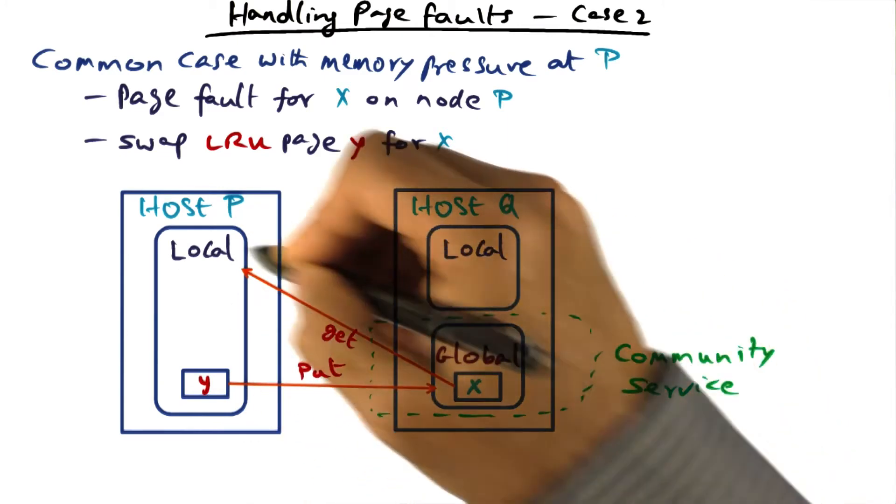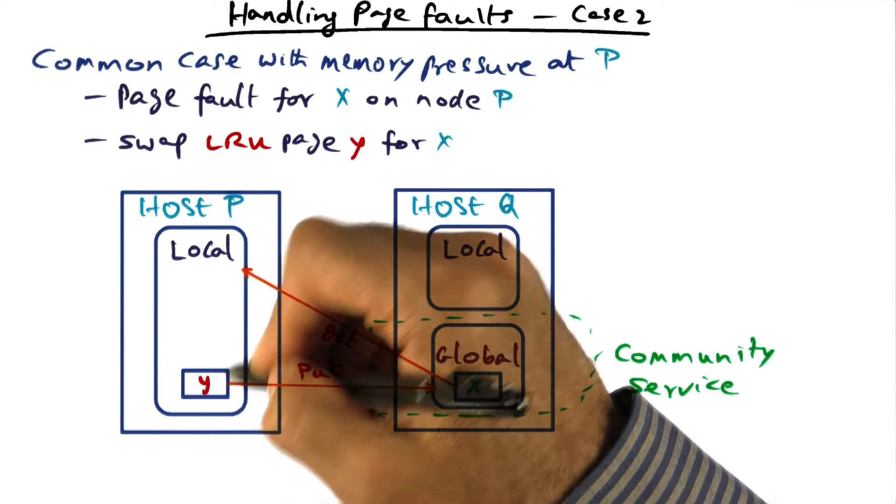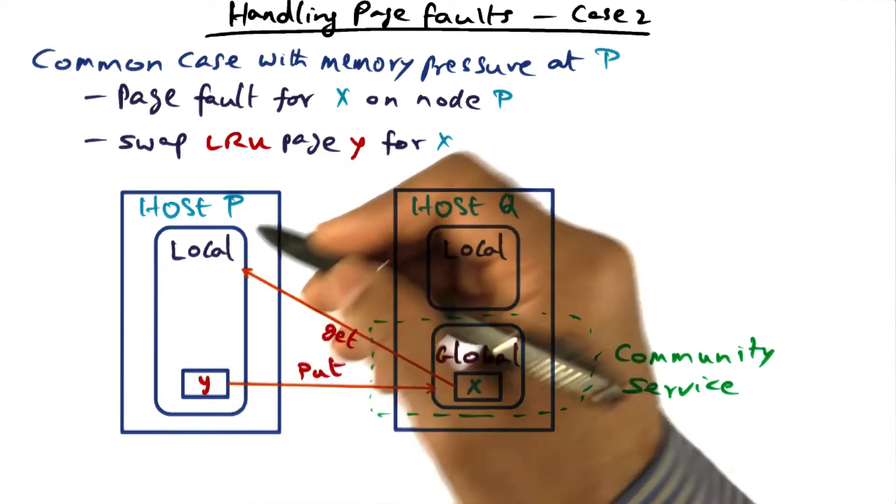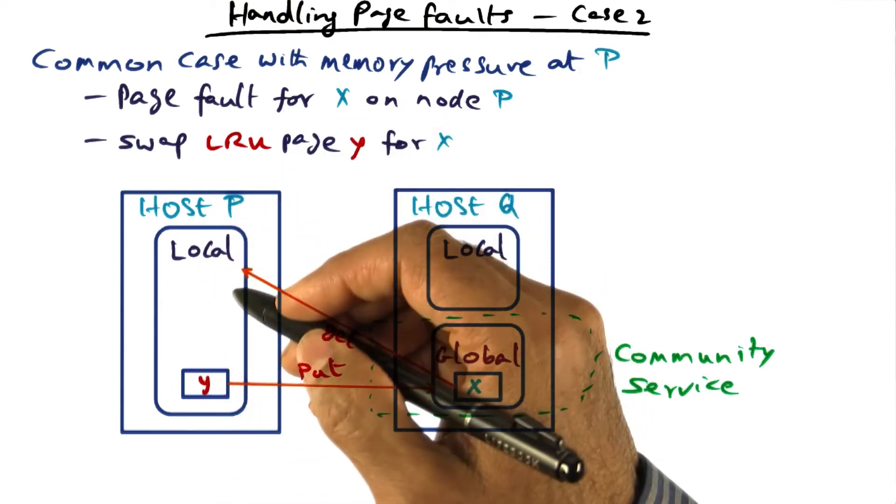So we get the missing page and we send out the oldest page from the local part of host P, recognizing that the global part is zero right now.